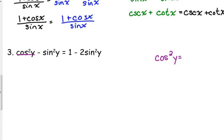According to our Pythagorean identities, what is cosine squared equal to? One minus sine squared. Cosine squared is equal to one minus sine squared. So I'm going to replace cosine squared on the left side with one minus sine squared.